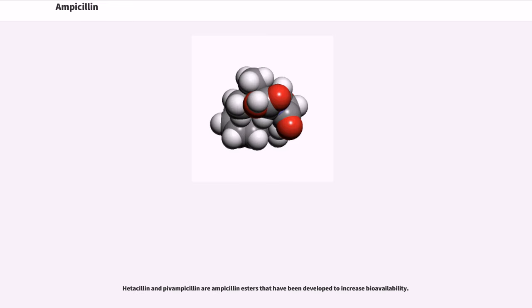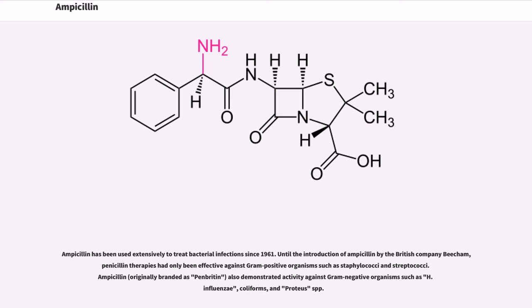Hetacillin and pivampicillin are ampicillin esters that have been developed to increase bioavailability. Ampicillin has been used extensively to treat bacterial infections since 1961. Until the introduction of ampicillin by the British company Beecham, penicillin therapies had only been effective against gram-positive organisms such as staphylococci and streptococci.